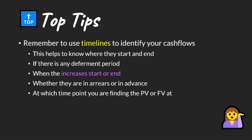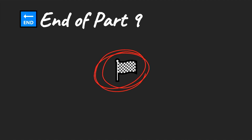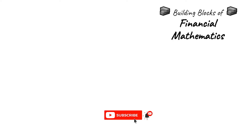Top tips: always use a timeline to identify your cash flows — specifically to see where they start and end and what the cash flows actually are. With increasing annuities it's even more important to write out where your cash flows start and end and what they will be. Thanks for watching — if you've enjoyed this video please like, subscribe, and share it with your friends.